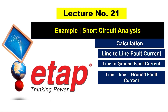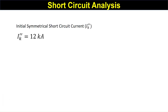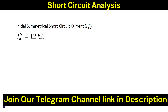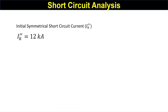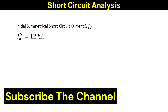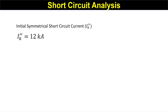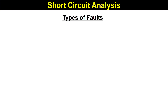In the previous lectures we calculated the three-phase initial symmetrical short circuit current, which was 2 kiloamperes. Then we calculated the peak short circuit current of a three-phase fault, the breaking current of the three-phase fault, and the steady state current of that three-phase fault.